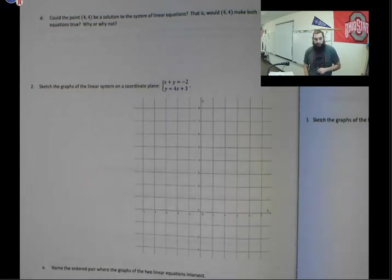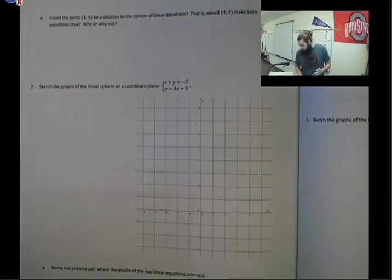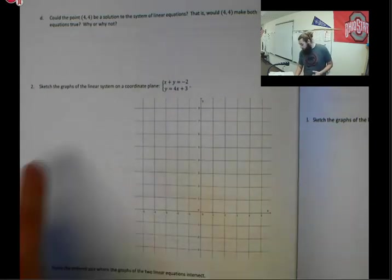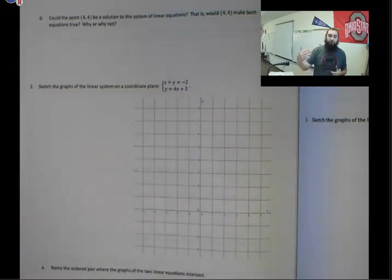We've got two equations: x plus y equals negative 2, and y equals 4x plus 3. So in this system of equations, we've got an equation in standard form and an equation in slope intercept form. The slope intercept form is going to be no problem for us to graph, very easy and straightforward. What we need to do is take our standard form equation, x plus y equals negative 2, and put that into slope intercept form so we can graph it more easily.